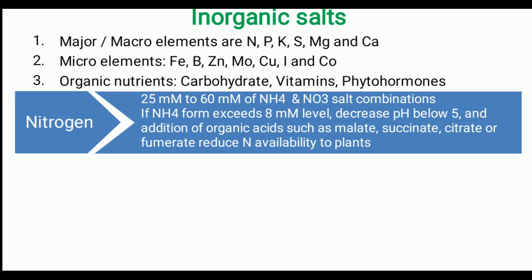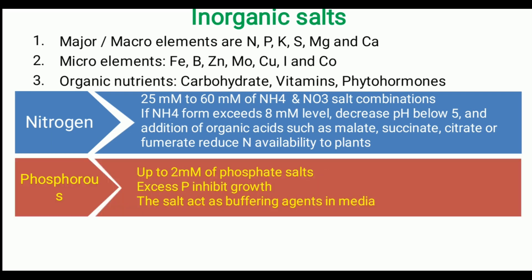Organic acids such as malate, succinate, citrate, and fumarate are also added as a nitrogen supplement. The second macro element is phosphorus, added up to 2 millimolar in the nutrient medium. Excess phosphate inhibits plant growth, so it should not exceed 2 millimolar. Beyond nutrient supplementation, phosphorus also acts as a buffering agent in the nutrient medium to maintain the pH.